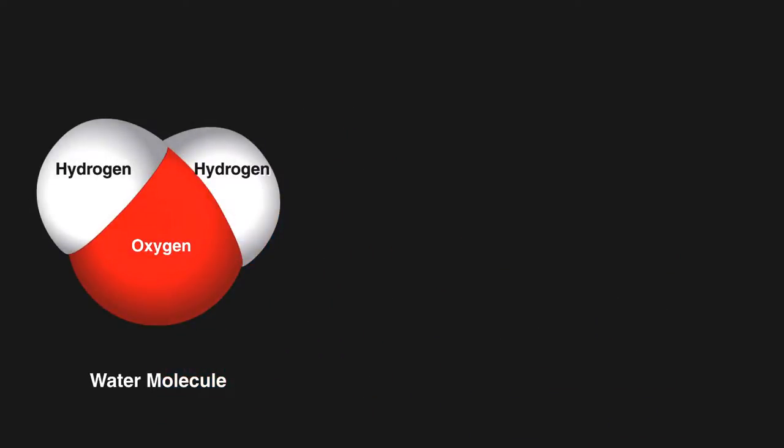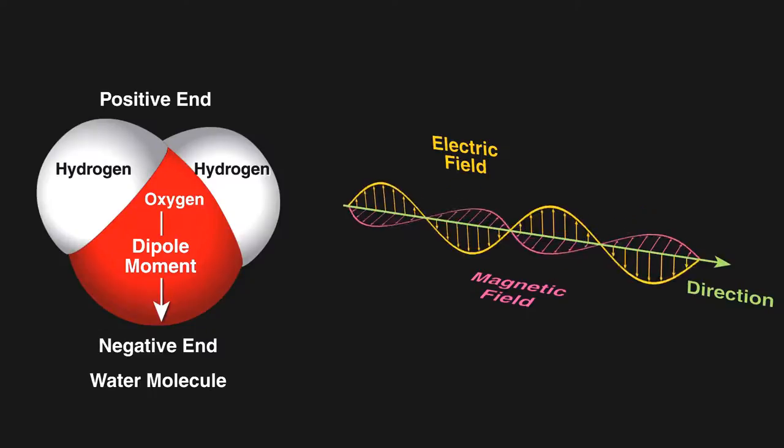Our food is filled with water, which is positively charged at one end and negative at the other. To give these molecules more energy, we expose it to electromagnetic waves that emanate from the tube.